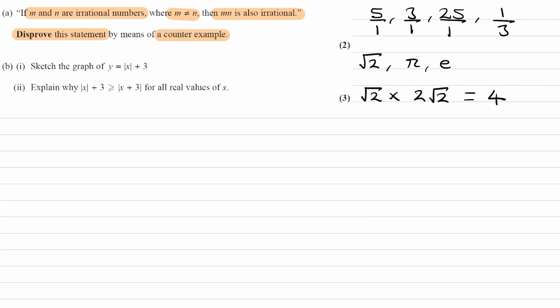Another example could be with pi. If you have pi multiplied by 5 over pi, both of these numbers are irrational. But when you multiply them together, you end up with just 5 — the pi's cancel out.